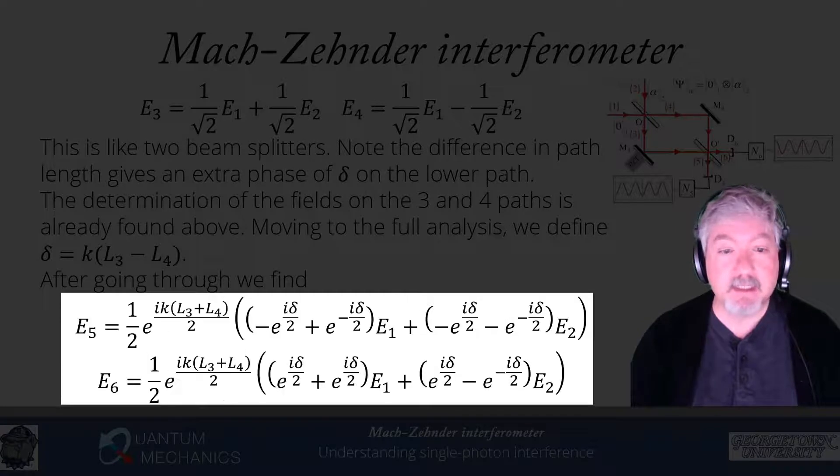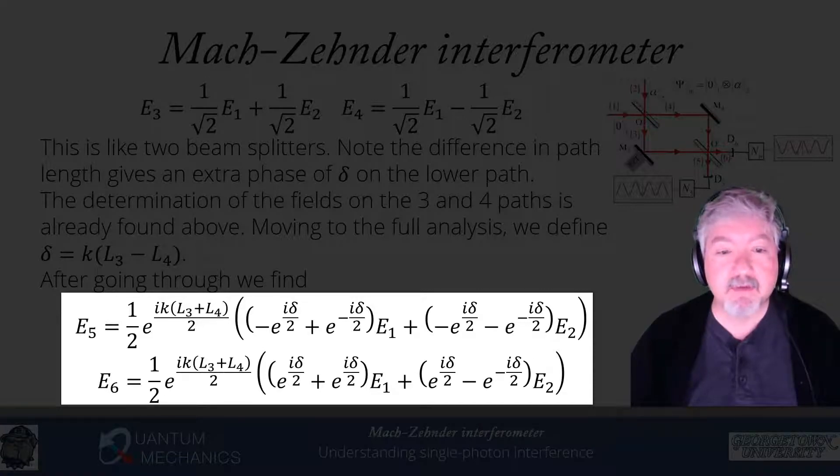Now we're going to recombine these together. We're going to factor out an e to the i k L3 plus L4 over 2. That leaves behind factors of delta that are either plus or minus delta over 2. So we're going to get, there's still a one half in front and the field E1 is multiplied by minus e to the i delta over 2 plus e to the minus i delta over 2. E2 is multiplied by minus e to the i delta over 2 minus e to the minus i delta over 2.